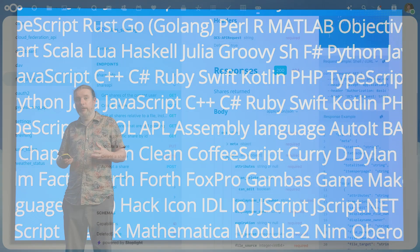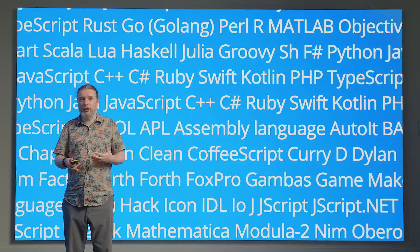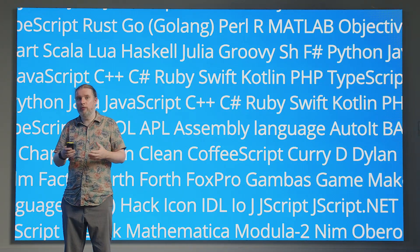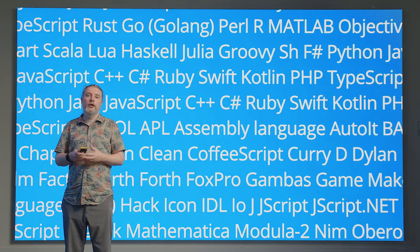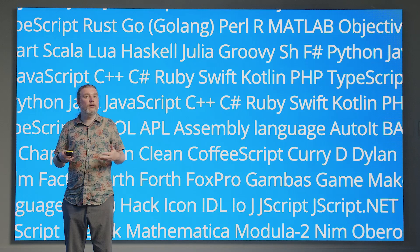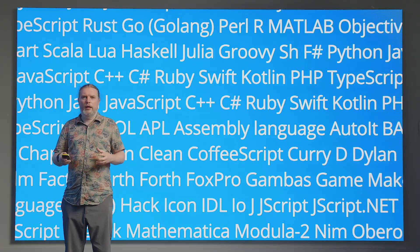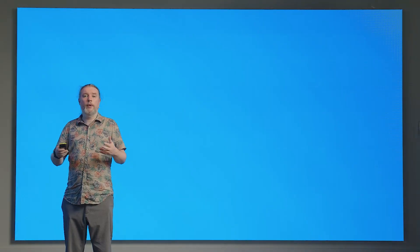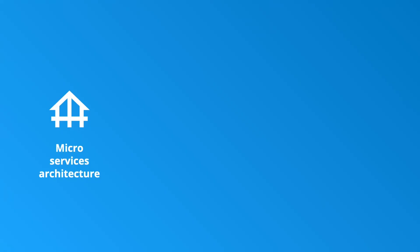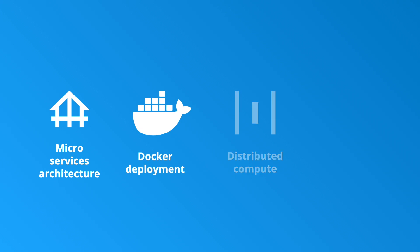Beyond building apps that interact with Nextcloud via the Open Collaboration Services API, you can of course build your own new native Nextcloud apps. Those too can be built in nearly any language you want — you are not limited to PHP, the core language of Nextcloud. Apps run in a microservices architecture and we use a Docker-based deployment system to make installing and running apps at scale easy and secure.